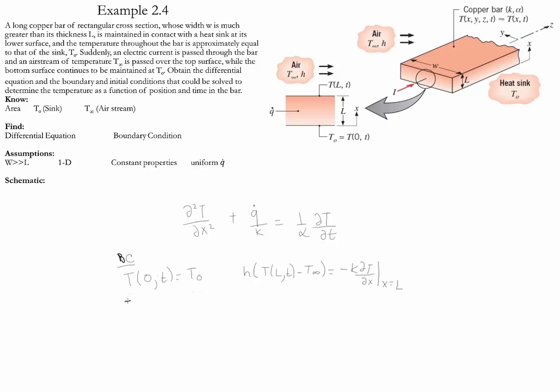For the initial condition, we define temperature at any position x for time equal to 0 to be uniform at T₀. Please go back and review each one of the boundary conditions and understand when to set them up depending on what the conditions are at each one of the surfaces.